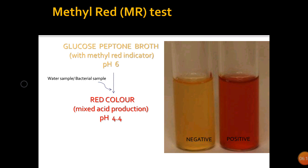In this picture we can see that the glucose peptone broth at pH 6 is still yellow in color. When the pH of the medium is reduced to 4 or below 4, the indicator color turns red from yellow. This shows a positive reaction for the presence of fermenting microorganisms in the sample.